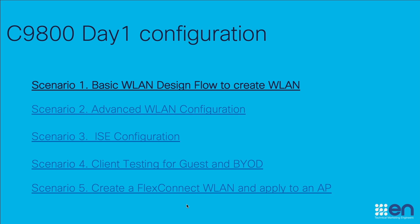It's going to be a series of recordings for different feature configurations on a Catalyst controller. We're going to have in this series a total of five scenarios, and possibly add some additional ones in the future. We're going to start now with scenario one, which is a basic WLAN design — how to create a WLAN, its basic security parameters, and how to connect the client to the WLAN. It's a very simple and fast configuration.